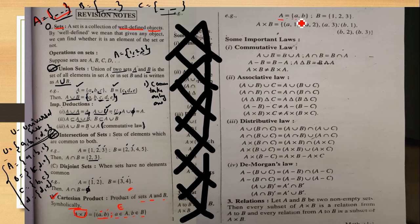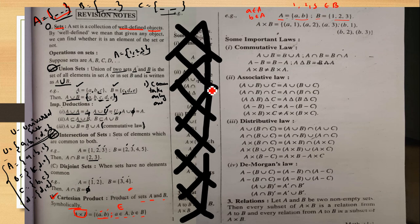For example, take the pair (a, b). Set A has elements {1, 2, 3}. So a belongs to A and b also belongs to A. The elements belong to B as well. A cross B — that is the Cartesian product.